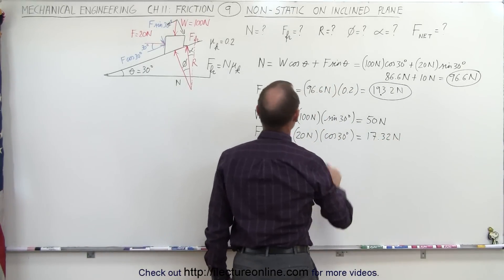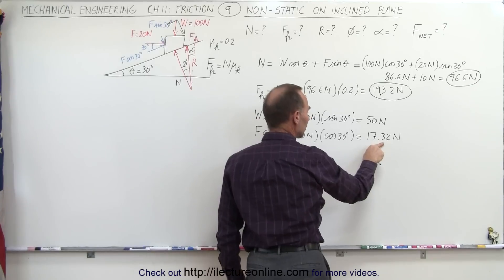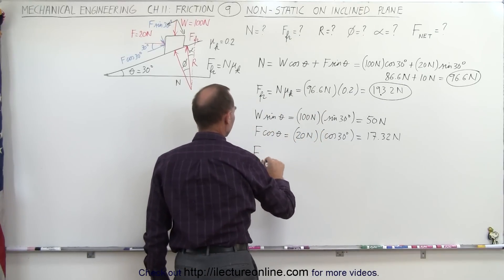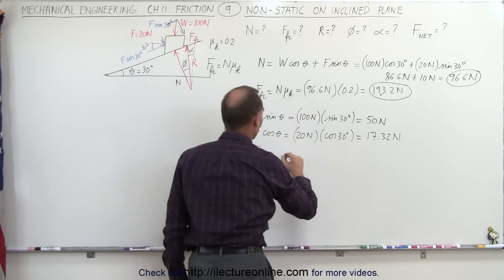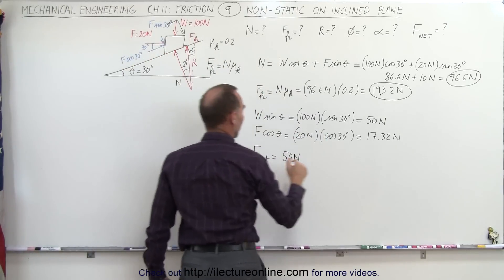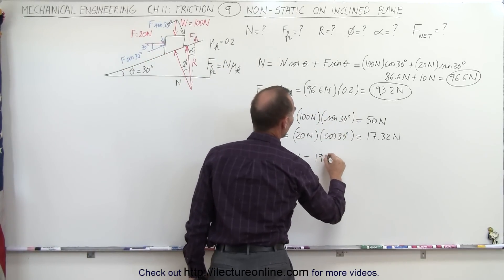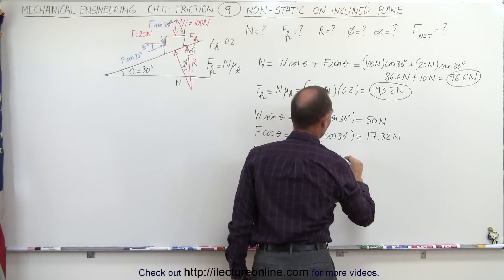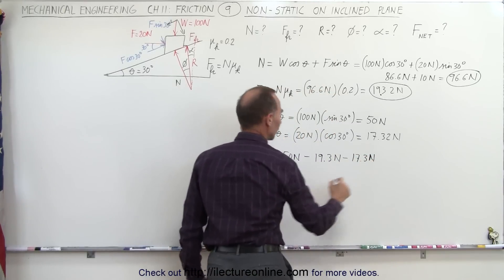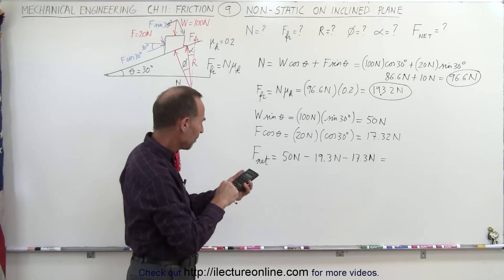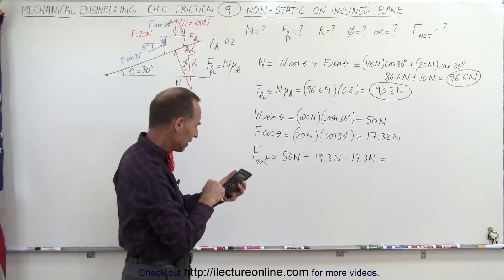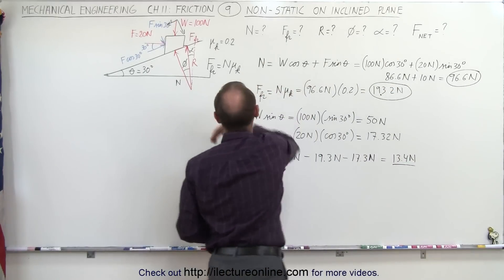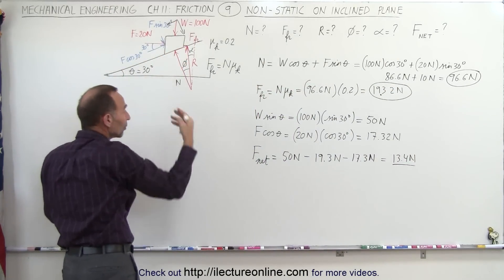Now we can calculate the net force. The friction force acts upward along the incline, the parallel component of the applied force acts upward, and the parallel component of the weight acts downward. So the net force equals 50 newtons minus the friction force of 19.3 newtons, minus the upward applied component of 17.3 newtons. That gives us 13.4 newtons acting down the incline — so there is indeed an acceleration down the incline.